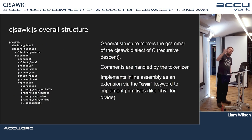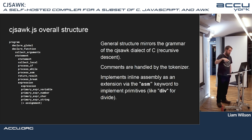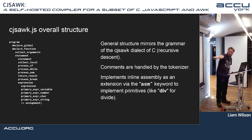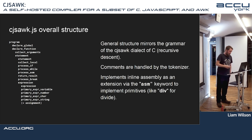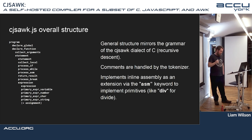Zooming out: the general structure of the CJS-ARC compiler mirrors the grammar of the CJS-ARC dialect of C — it's essentially just a recursive descent parser. At the top is program, then declare-global, declare-function, collect-arguments, processing of various tokens, and then a simple expression parser at the bottom which can't handle operators like add and subtract, but can handle function calls. Comments are handled by the tokenizer.